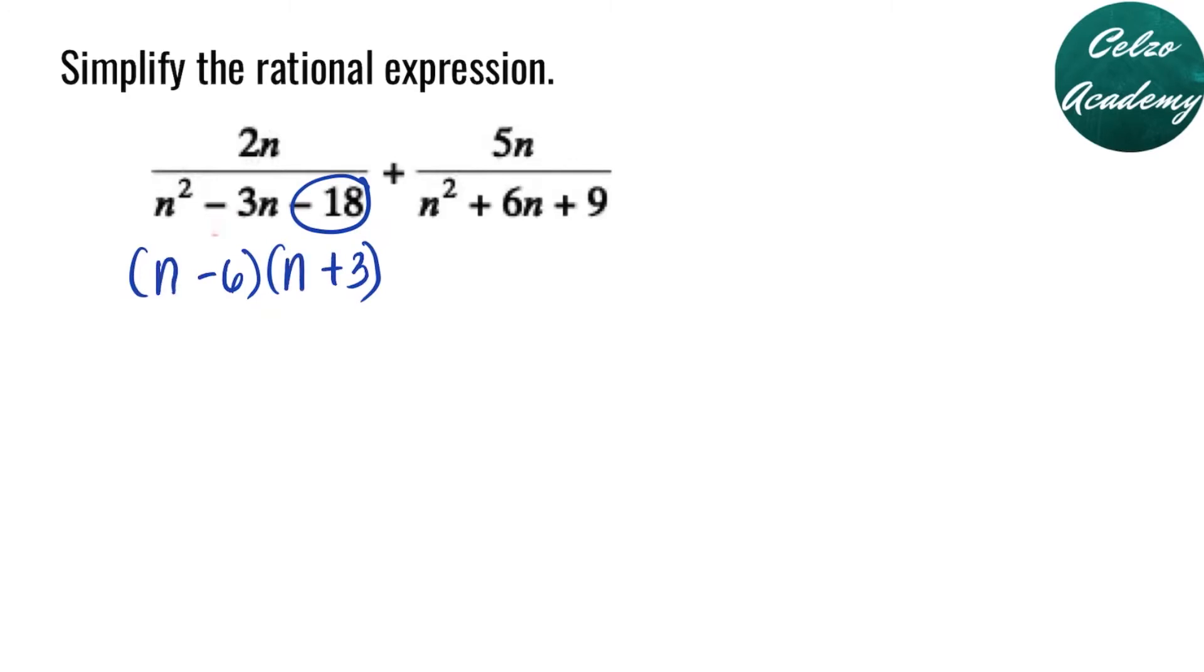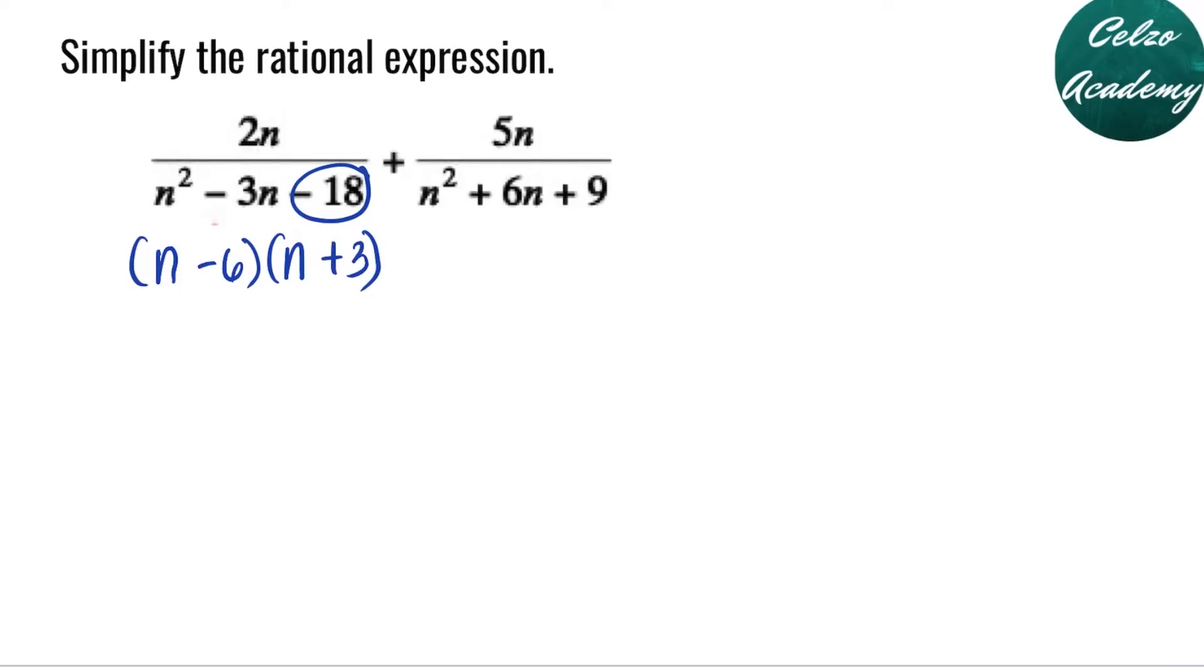Next, let's factor n squared plus 6n plus 9. This is a perfect square trinomial. Or you can factor this by getting factors of 9 that will give us a sum of 6. And that is, of course, 3 and 3. 3 times 3 is 9 and 3 plus 3 is 6. So this second denominator can be factored out as n plus 3 to the second power.